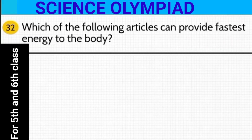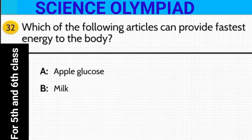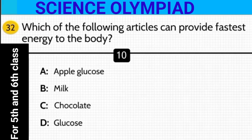Which of the following can provide the fastest energy to our body? Is it apple, glucose, milk, chocolate, or glucose?